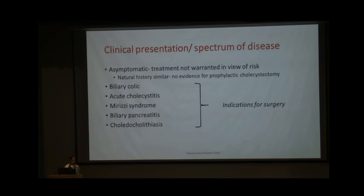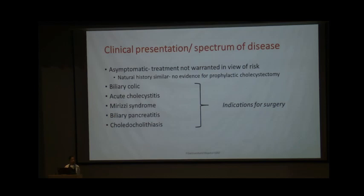Clinical indications for surgery fall into three categories: asymptomatic stones, symptomatic uncomplicated, and symptomatic complicated. For asymptomatic gallstones, surgery is generally not advised prophylactically — small follow-up studies suggest the complication risk in cirrhosis is not higher than the general population despite higher incidence, so there is no evidence currently for prophylactic cholecystectomy. Patients with complications such as acute cholecystitis, choledocholithiasis, Mirizzi syndrome, or pancreatitis require specific management discussed in detail.